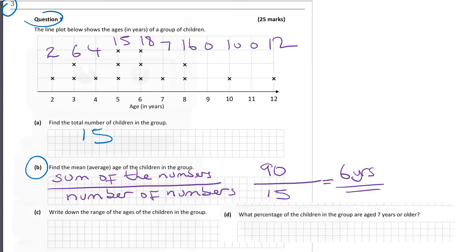Write down the range. Part C asks us to write down the range of the ages of the children in the group. So the range is always the difference between the highest number and the lowest number. So in this case, it's 12 minus 2, which is equal to 10 years.